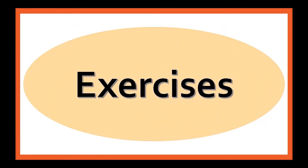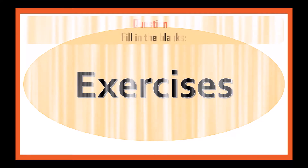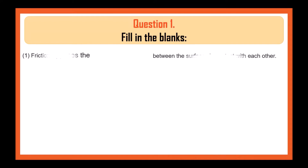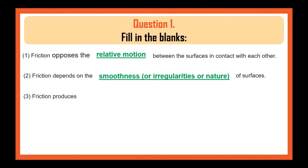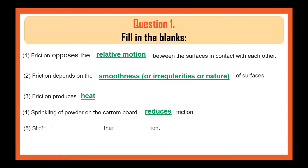Now let's do the textbook exercise. First question is fill in the blanks. Friction opposes the relative motion between the surfaces in contact with each other. Friction depends on the smoothness, irregularities, or nature of the surface. Friction produces heat. Sprinkling of powder on a carom board reduces friction. Sliding friction is less than static friction.